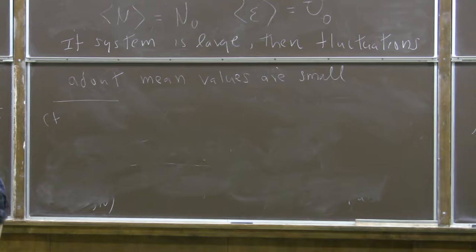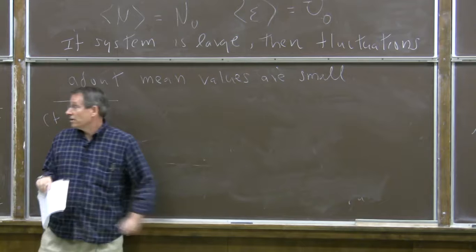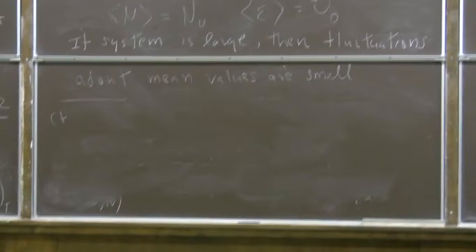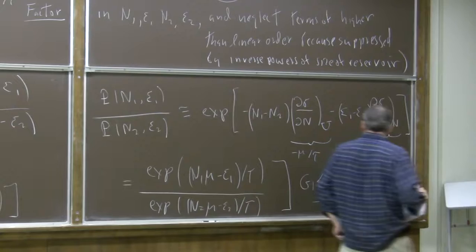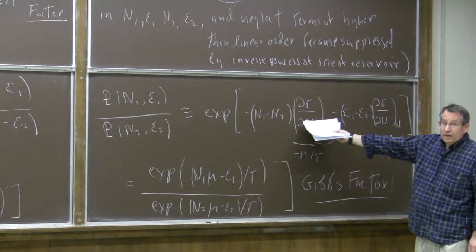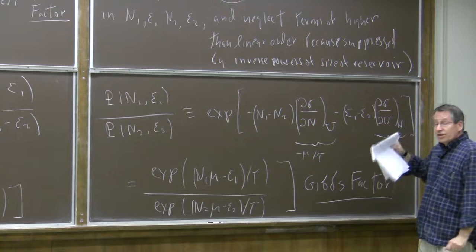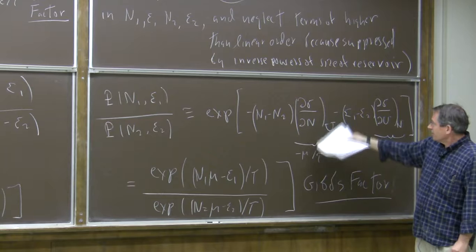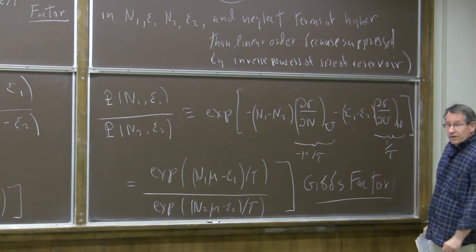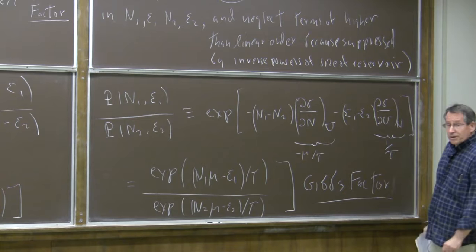When talking about the chemical potential in the context of the Gibbs probability distribution, here's where it arose: we considered how the number of states of the reservoir changes when the particle number and energy of the reservoir vary. This is the chemical potential — actually minus chemical potential divided by temperature — of the reservoir. And one over temperature of the reservoir. Those are fixed properties of the reservoir, which is huge. That determines the probability distribution for the system. As far as the system is concerned, mu and tau are just constants.